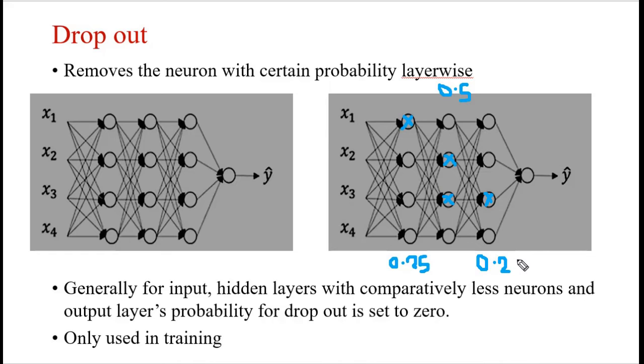Generally, for input layers, hidden layers with comparatively fewer neurons, and the output layer, the probability for dropout is set to zero. Remember, this dropout is only used in the training phase. It will not be used in the testing phase.